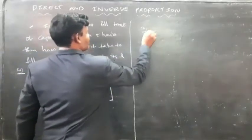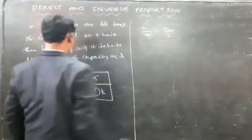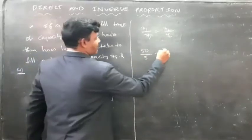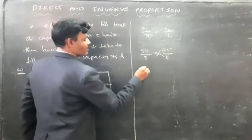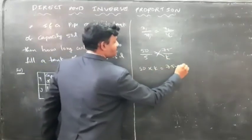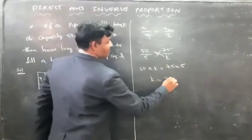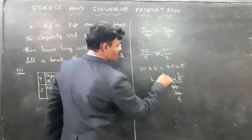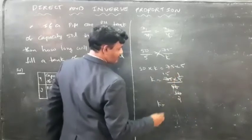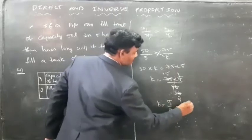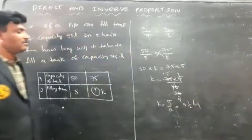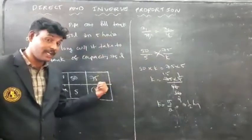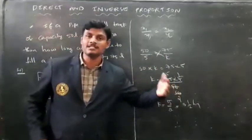We can write x1 by y1 is equal to x2 by y2. x1 is 50, y1 is 5, x2 is 75, y2 is k. Doing cross multiplication: 50 into k is equal to 75 into 5. Then k is equal to 75 into 5 divided by 50, which equals 15 by 2, that is 7.5, which is 7 hours 30 minutes. So to fill the 75 liters tank, it will take 7 hours 30 minutes.